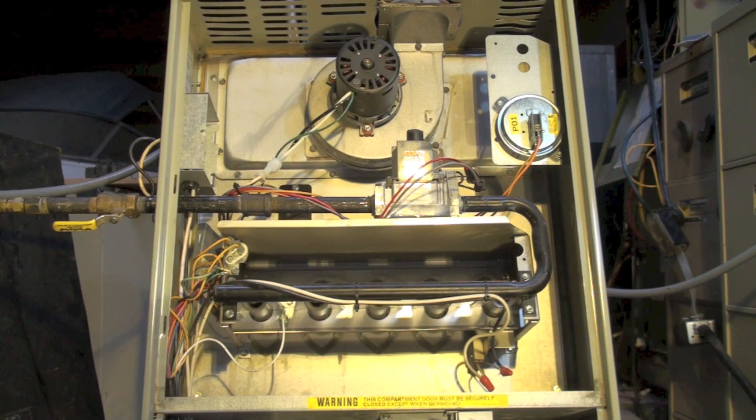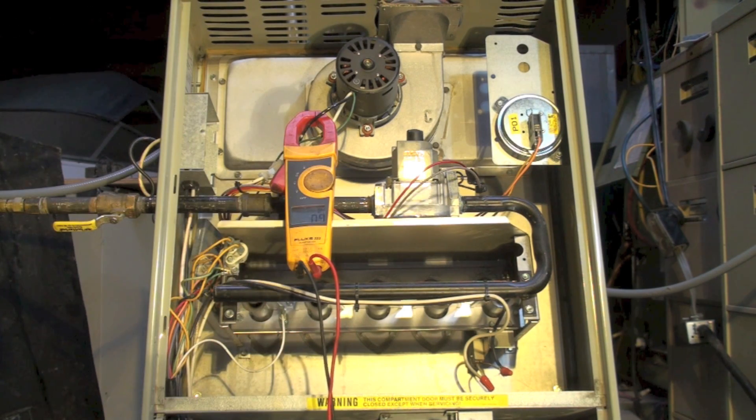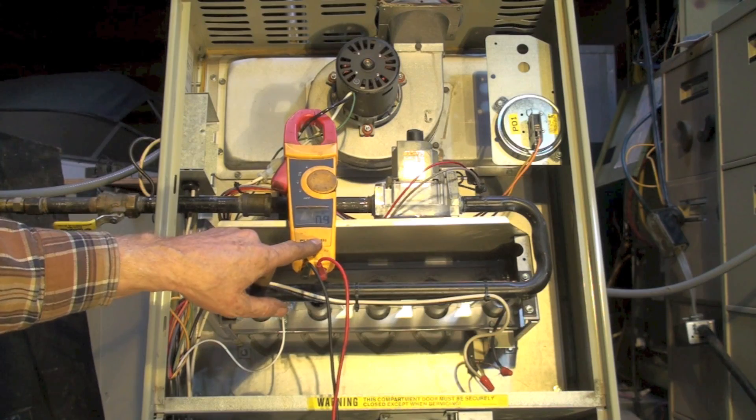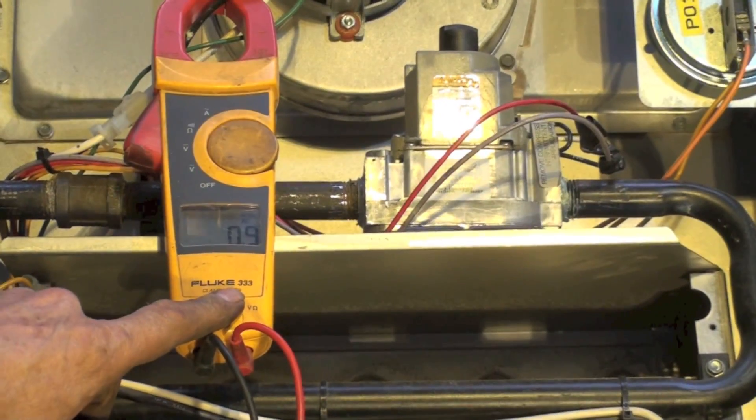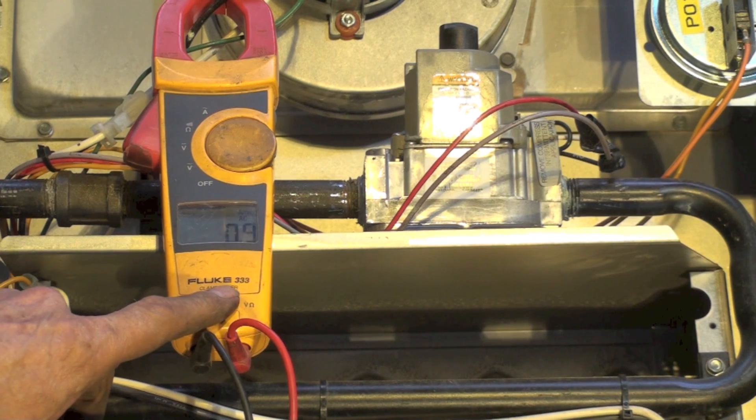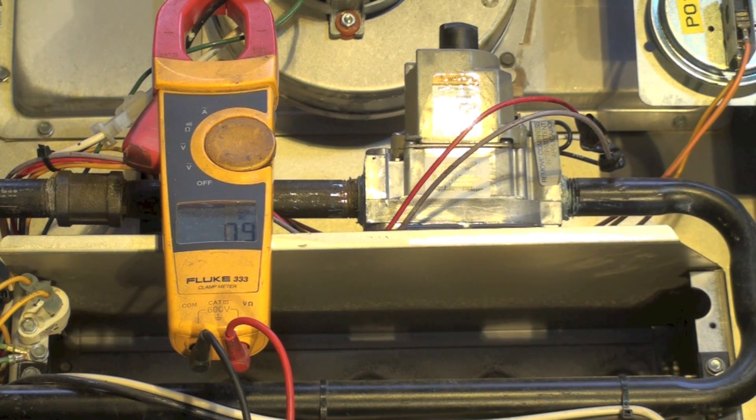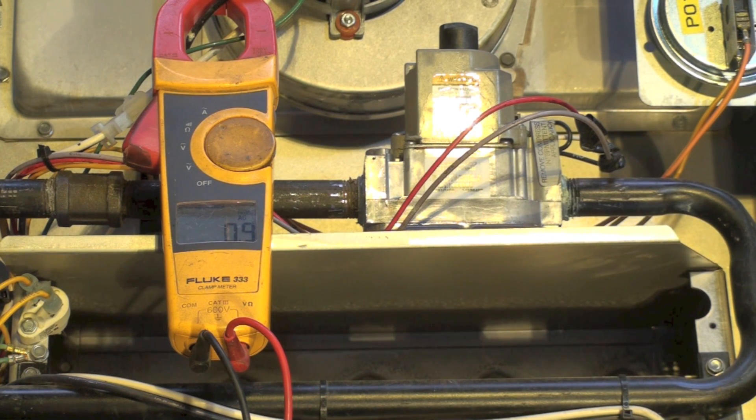Let's start looking around a little bit. Okay, when I put my amp reader on the motor, it's reading 0.9 amps, but it's not rotating.